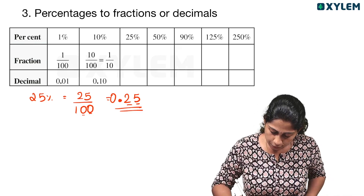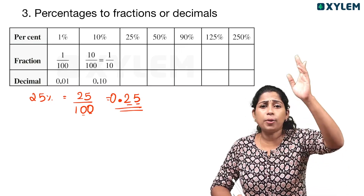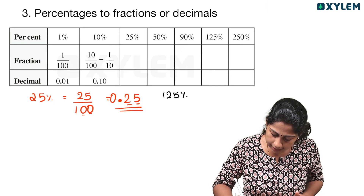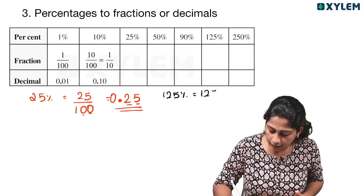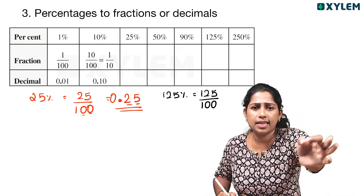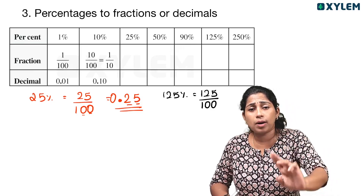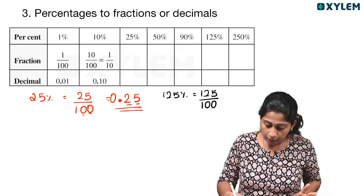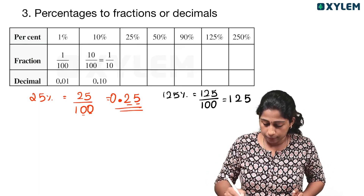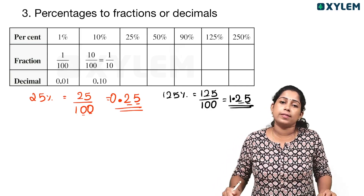Now 50 percent and 90 percent — you can do it. For 125 percent: 125 percent is equal to 125 divided by 100. When you divide by 100, you move the decimal point 2 places. So we write the point — 1, 2 decimal places — and 1.25 is the answer.